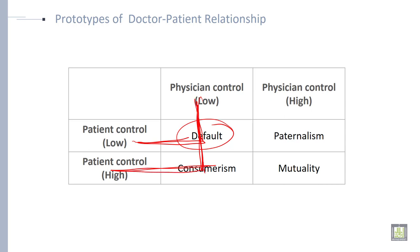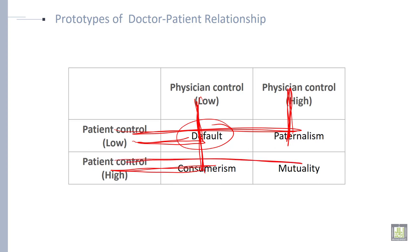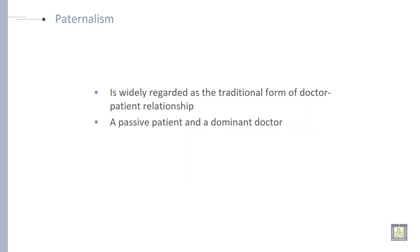The third one is paternalism. When physician control is very high and patient control is very low, then it is called paternalism. And mutuality is when both have high control on each other — that is called mutuality. Let's discuss each one in detail.